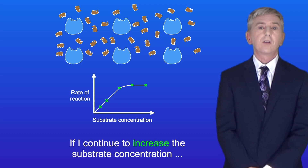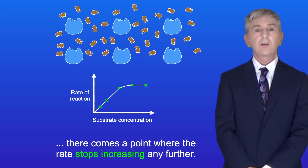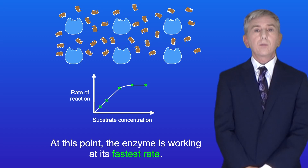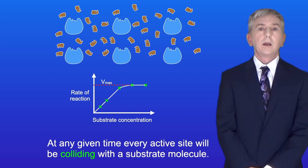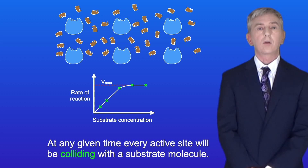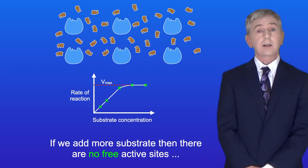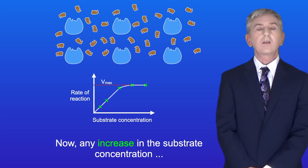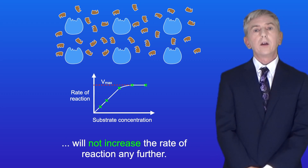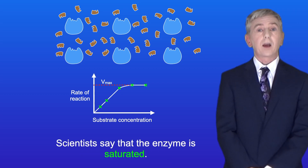Now if I continue to increase the substrate concentration, then there comes a point where the rate stops increasing any further. At this point the enzyme is working at its fastest rate, and scientists call this Vmax. At any given time every active site will be colliding with a substrate molecule, so if we add more substrate, there are no free active sites for the extra substrate molecules to collide with. So any increase in the substrate concentration will not increase the rate of reaction any further. Scientists say that the enzyme is saturated.